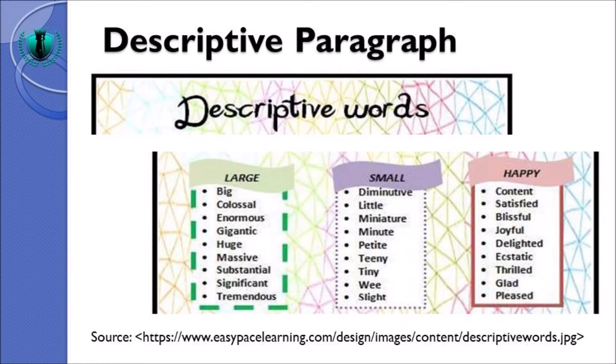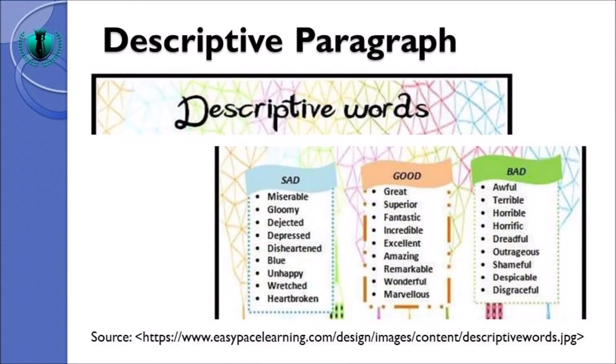All these words express the meaning of description. Moving on to the next group of descriptive words, we have three adjectives: sad, good, and bad. Words that have similar meaning to sad are: miserable, gloomy, dejected, depressed, disheartened, blue, unhappy, wretched, heartbroken.